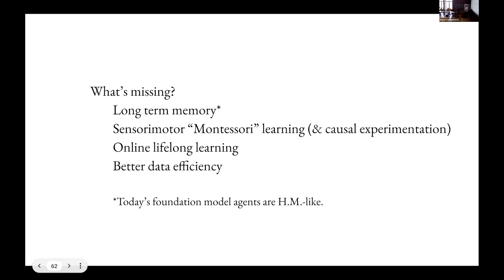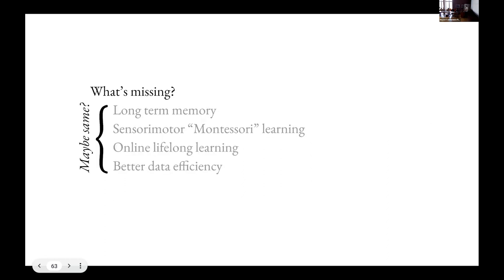So what's missing? Well, one thing, the one thing that I think all of us working on big models agree is missing is long-term memory. So we certainly have narrative and long-term memory. And these large models only have a context window. And the fact that they're training is separate from inference and that no matter how convincingly it tells you that it's remembered something that you just said, the moment it scrolls out of the context window, it's gone. And so in that sense, they're kind of HM-like, they're Henry Molaison-like. So I have a feeling that this long-term memory, sensory motor learning, online, lifelong learning, better data efficiency are probably all sort of the same thing. They're probably all related to what the entorhinal cortex and the hippocampus do for us. And I'm not sure that there's anything else that is particularly missing, or at least I'm not convinced that there's anything else that the Marcus loop won't resolve over the coming months and small number of years.